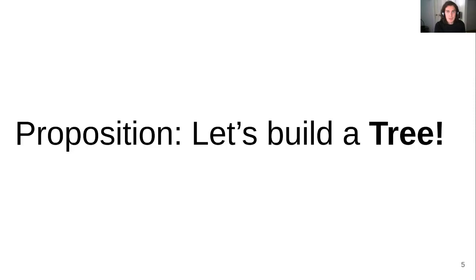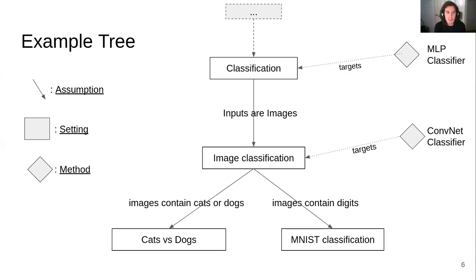Our proposition is to build a tree to organize the field of continual learning. Here's a simple example of what I mean by a tree. These boxes here are settings. A classification setting is more general than an image classification setting, in which we assume — and assumptions here are arrows — we assume that inputs are images. Likewise, we can also assume that the images are only digits, and then we recover the MNIST classification setting. On the right, methods can target a given setting and are directly reusable on any setting that is more specific than their target setting.